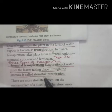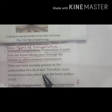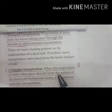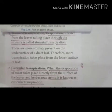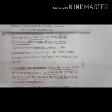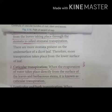Stomata are the tiny pores which are present on the surface of leaves. Next is cuticular transpiration. When the evaporation of water takes place directly from the surface of leaves and herbaceous stem, it is known as cuticular transpiration. So cuticular transpiration is the loss of water that takes place directly from the surface of the leaves.